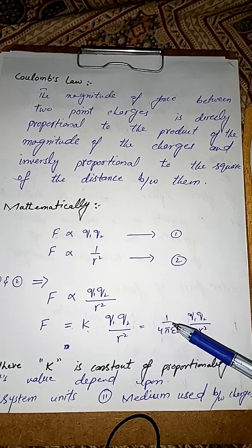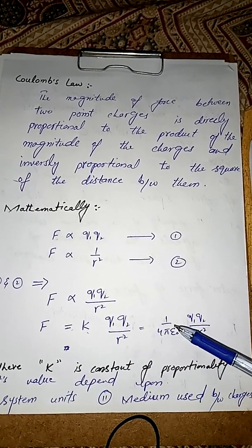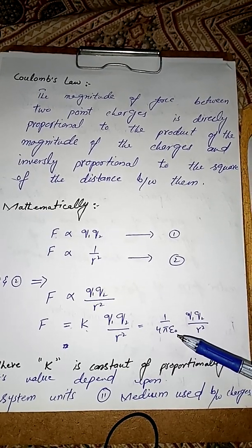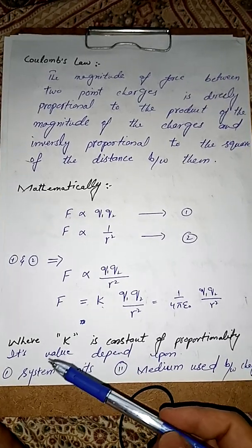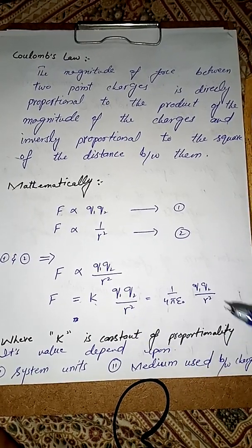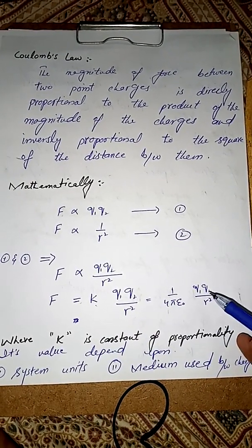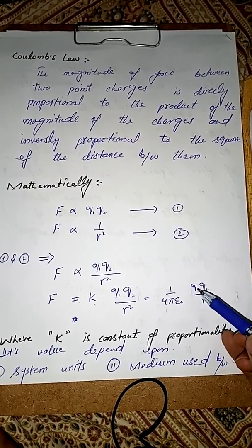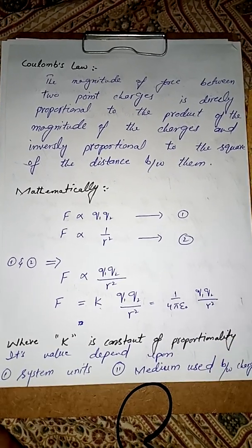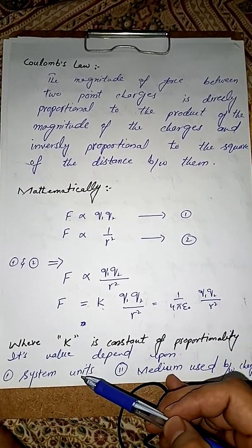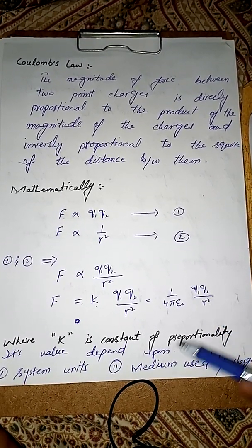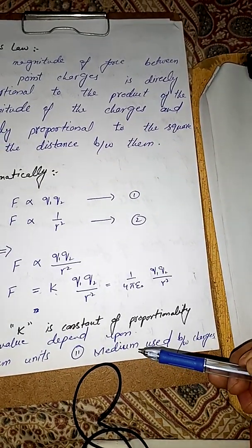This constant k is known as the constant of proportionality and can be written as 1 over 4πε₀. The value of k depends upon two factors: first, the system of units used for the quantities such as charge, distance, and permittivity; and second, the medium used between the charges.